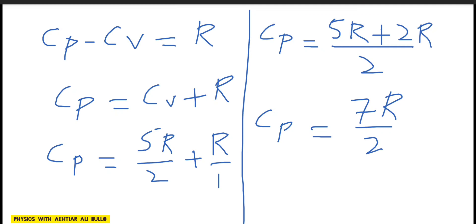We have obtained CP as 7R upon 2. This is equation number 2. And the value of CV which is given as 5R upon 2, this is equation number 1.